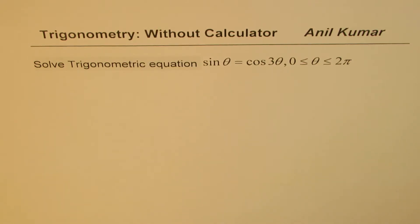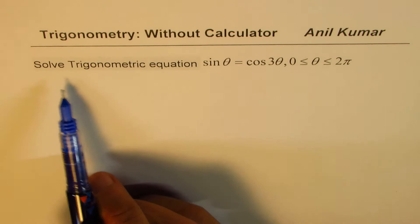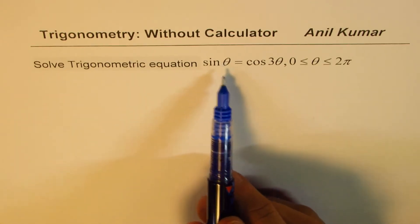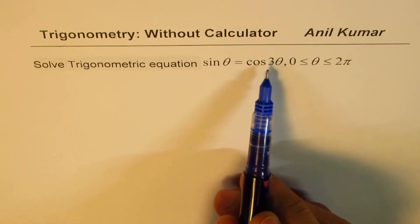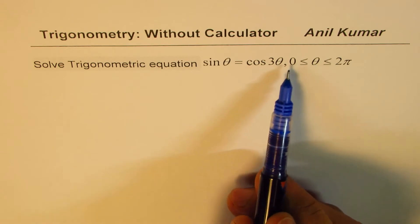I am Anil Kumar. Here is a trigonometric equation where we'll use compound angle formulas to solve. The equation is: solve trigonometric equation sine theta equals cos 3 theta where theta is between 0 to 2 pi.